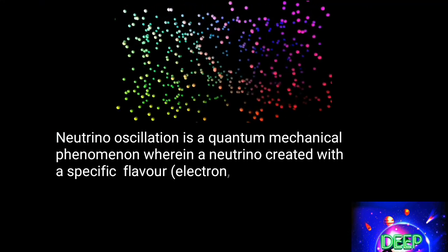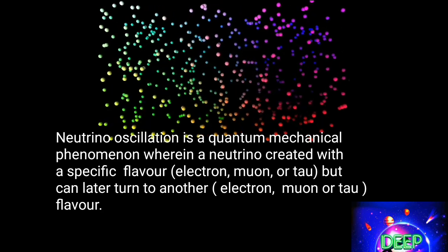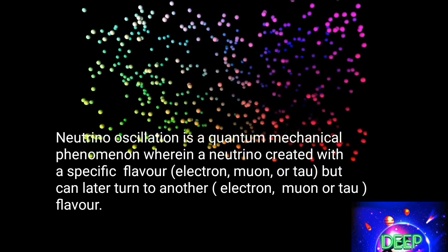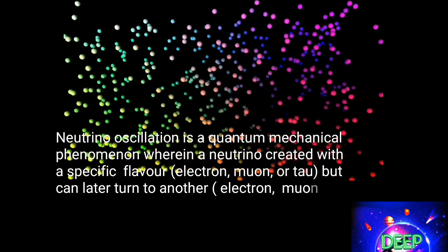Neutrino oscillation is a quantum mechanical phenomenon wherein a neutrino created with a specific flavor can later be changed to have a different flavor.